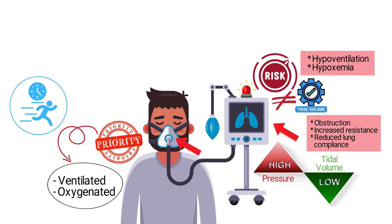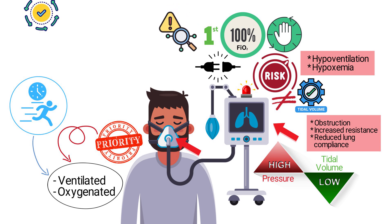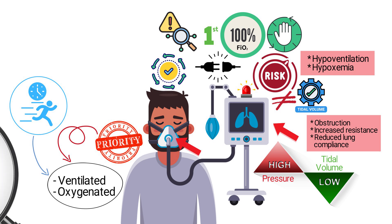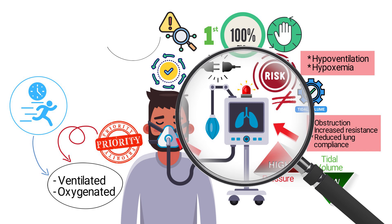Therefore, immediate action must ensure adequate ventilation and oxygenation. When ventilator issues arise, disconnecting the patient and providing manual ventilation with 100 percent FiO2 is the safest first step. This prevents delays in treatment while you troubleshoot the underlying issue. After ensuring the patient is stable, then you can examine the ventilator and circuit for possible causes such as kinks, obstructions, or equipment malfunctions.